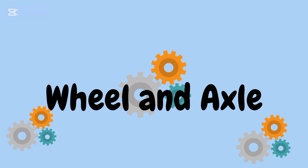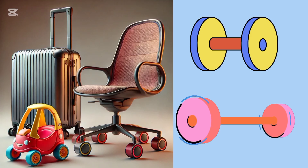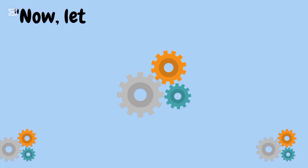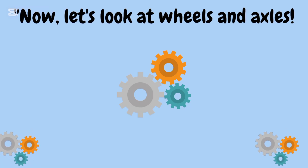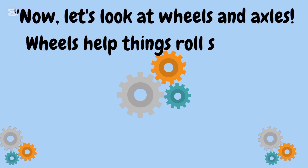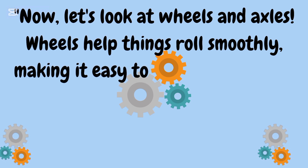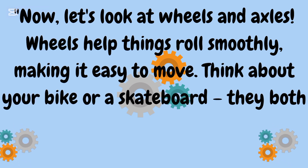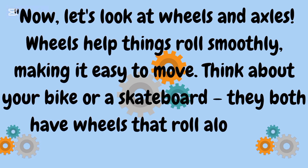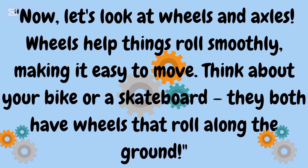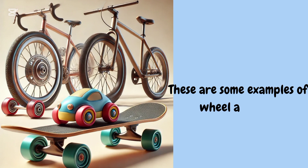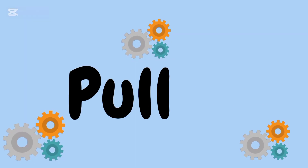Next is wheel and axle. You see examples of wheel and axle. Wheels help things roll smoothly, making it easy to move. Think about your bike or a skateboard — they both have wheels that roll along the ground. You see in the picture there are some examples of wheel and axle.